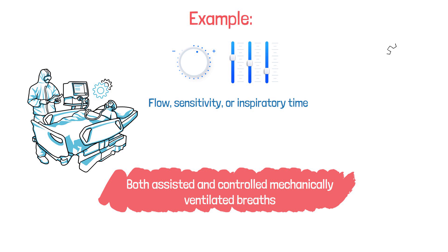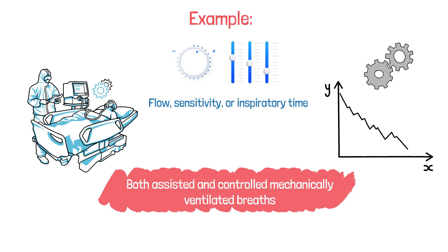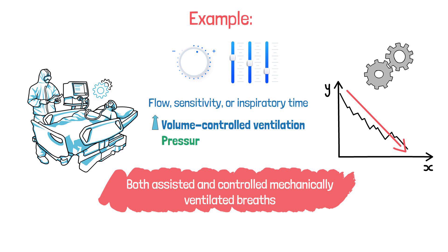Patient-ventilator dyssynchrony can occur in both assisted and controlled mechanically ventilated breaths. In general, the less control the ventilator has on the patient's respiratory pattern, the less likely they will experience dyssynchrony. Volume-controlled ventilation typically results in more cases of dyssynchrony because it controls volume, flow, and time, whereas modes such as pressure support ventilation typically result in the least amount of dyssynchrony cases.